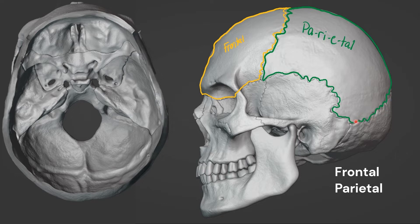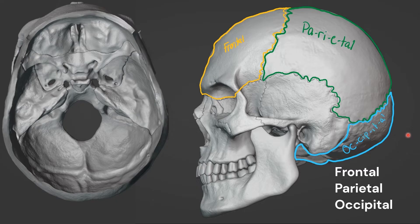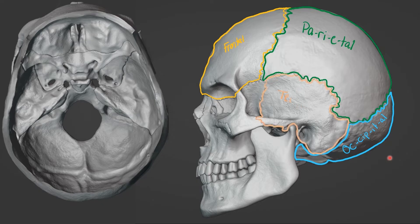Cross this suture in the back, which is the lambdoid suture, and you're in the occipital bone. And then this suture here — the squamous suture — below that is the temporal bone.